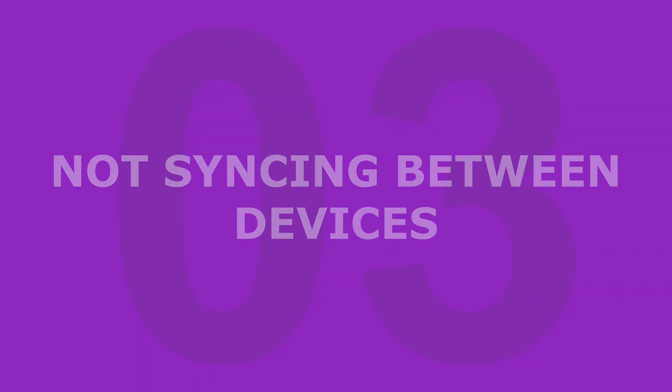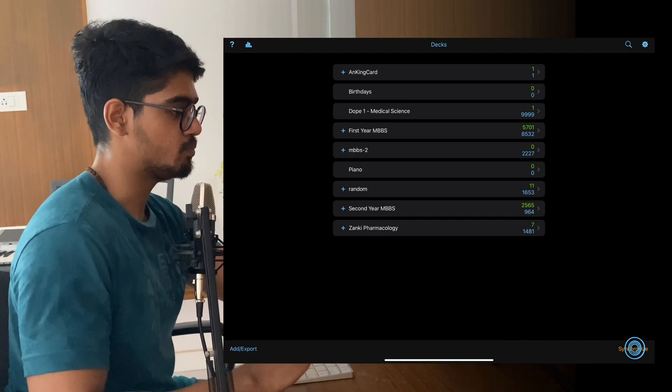Point number three is not syncing the decks properly if you're using multiple devices, because losing all your cards is the last thing you would ever want in Anki. Please make sure you are syncing the decks properly. On my iPad there is a synchronize option in the bottom right, but if you're using the computer, Anki will sync on its own every single time. If you're using Anki mobile on iPad or iOS, make sure you click the sync button every time, or at least once a week, so that no data gets lost.